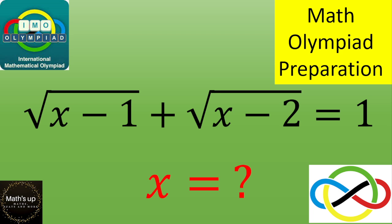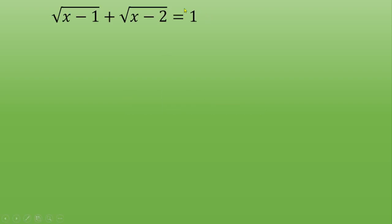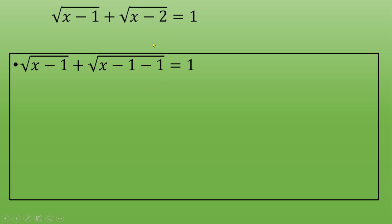There are many ways to solve this, but one approach is to recall the same quantity. We have the first square root of (X minus 1) and the second square root of (X minus 2). The idea is to rewrite negative 2 as negative 1 minus 1, then set capital X equal to X minus 1.